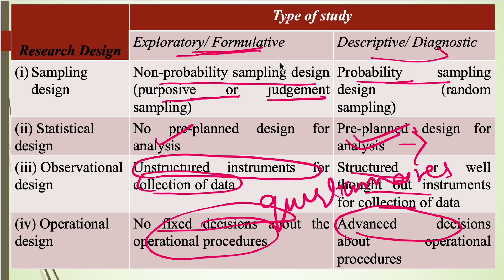Regarding sampling, statistical method, observational method, and operational method: the sampling design used for exploratory study is non-probability sampling — purposive or judgment sampling. Whereas for descriptive or diagnostic research design, we use probability or random sampling, such as quota sampling or simple random sampling. For statistical method, there is no particular method for exploratory research design, whereas in descriptive research design, we have to fix the statistical method to be used at the beginning of the research process.